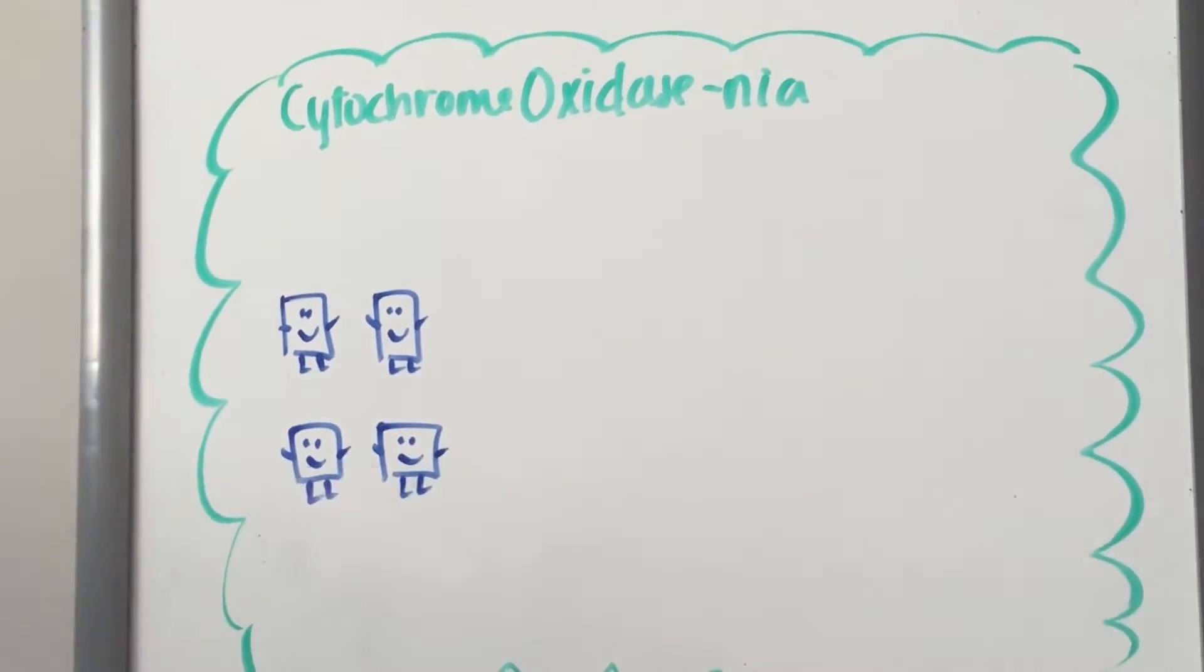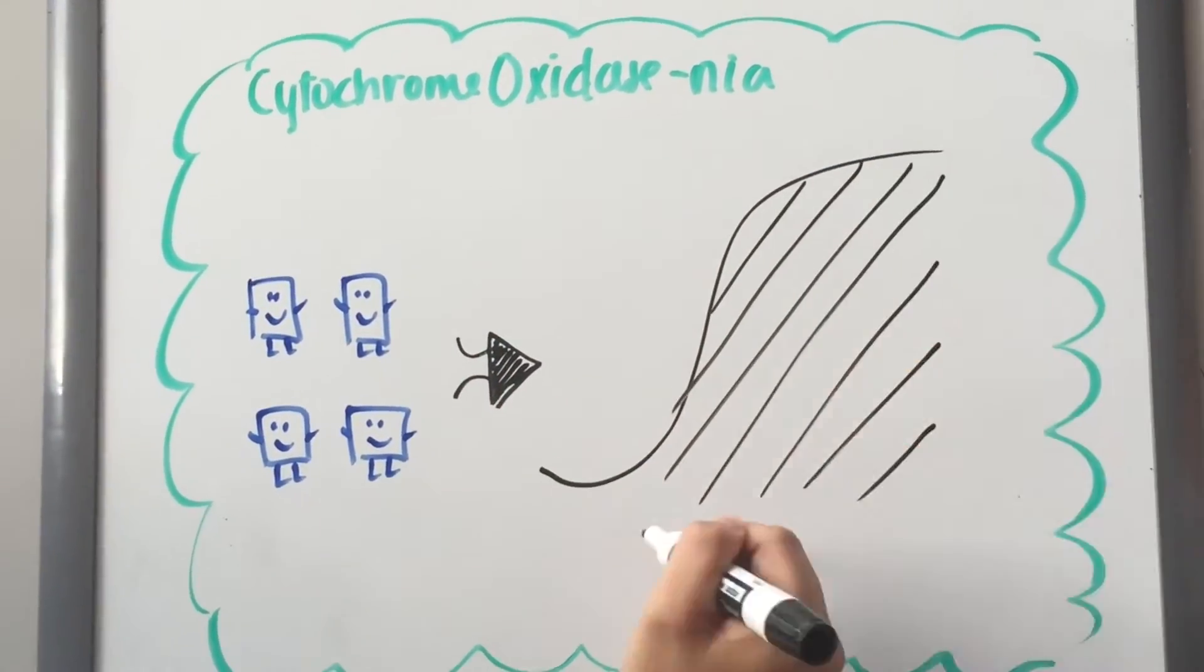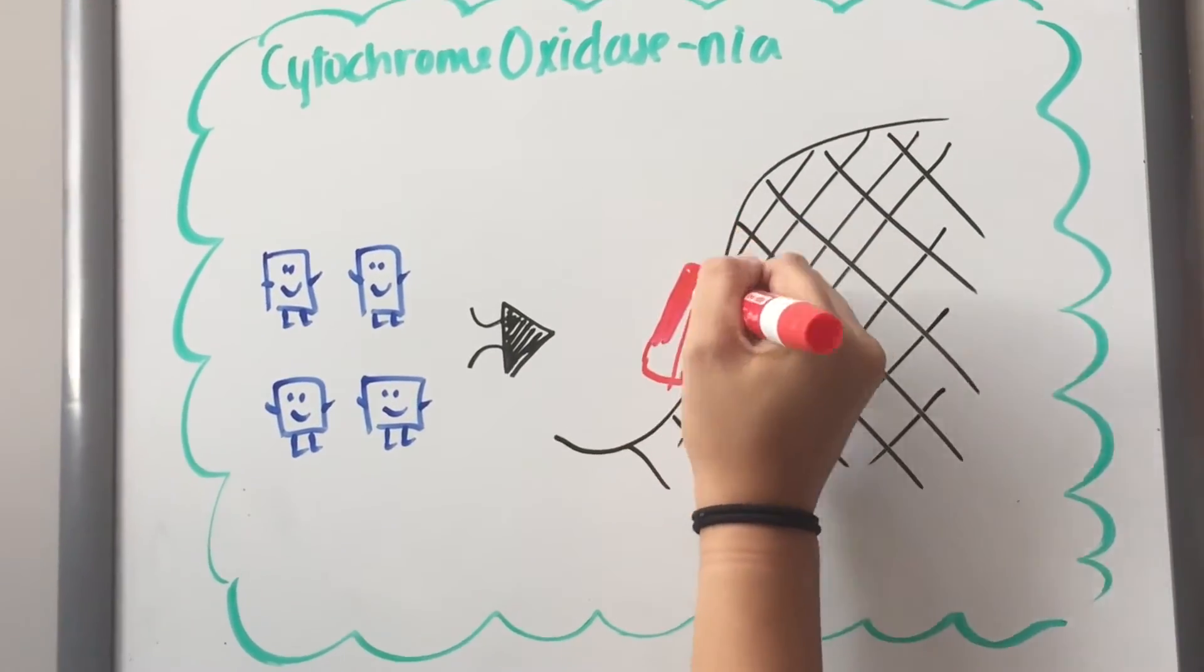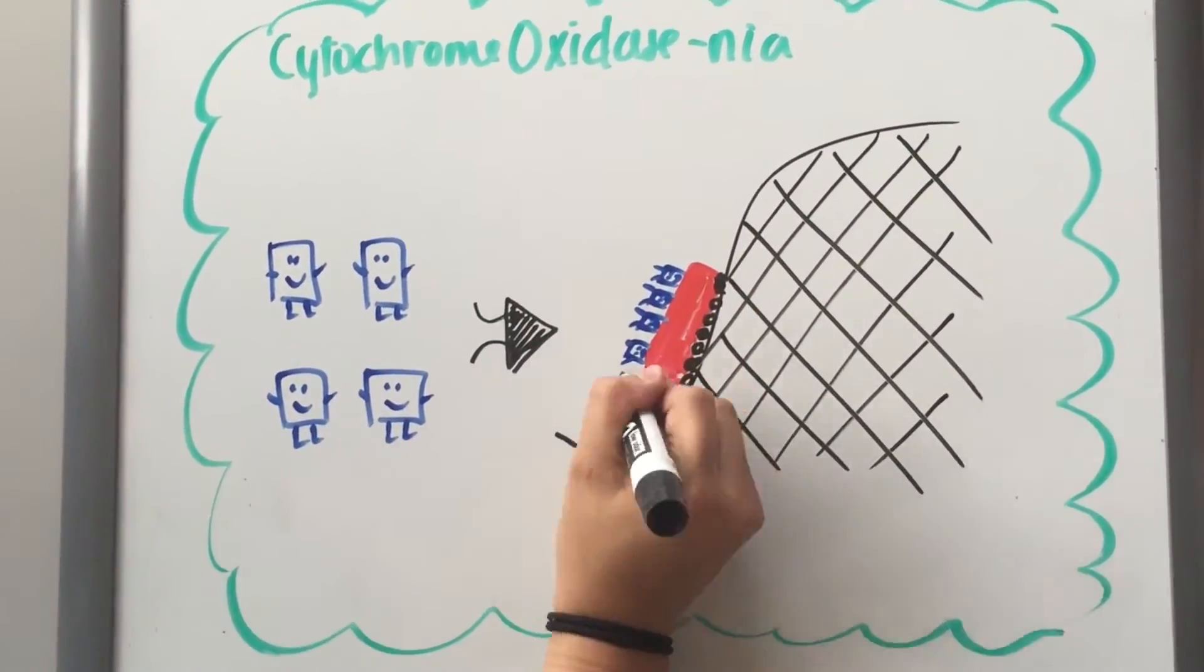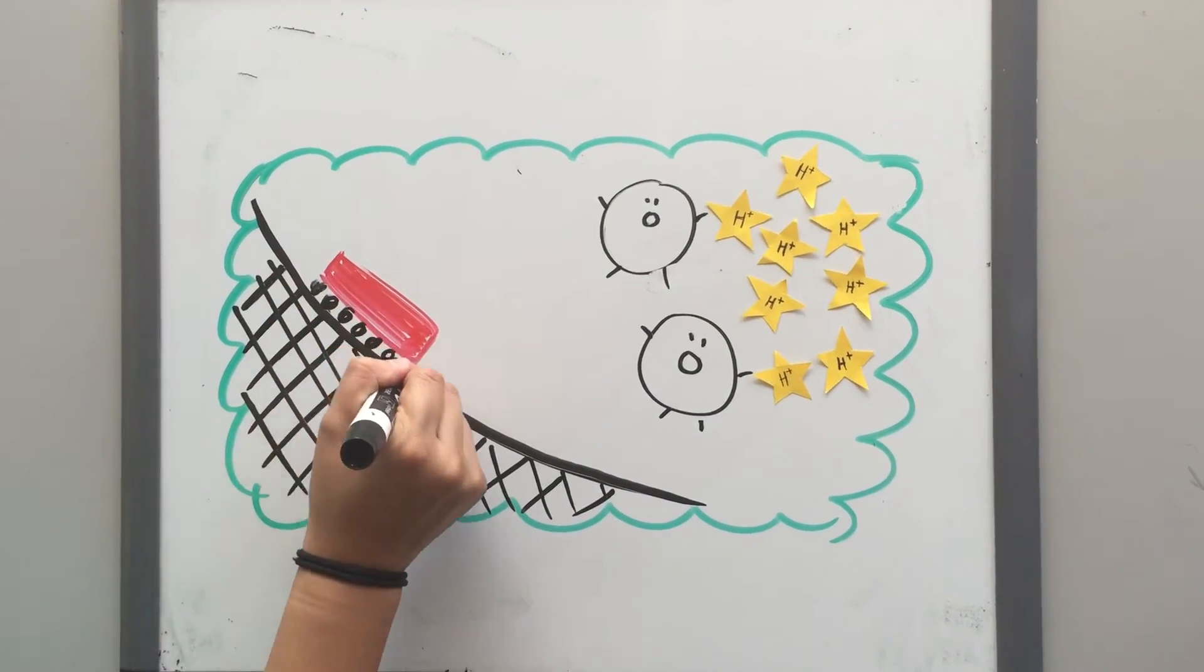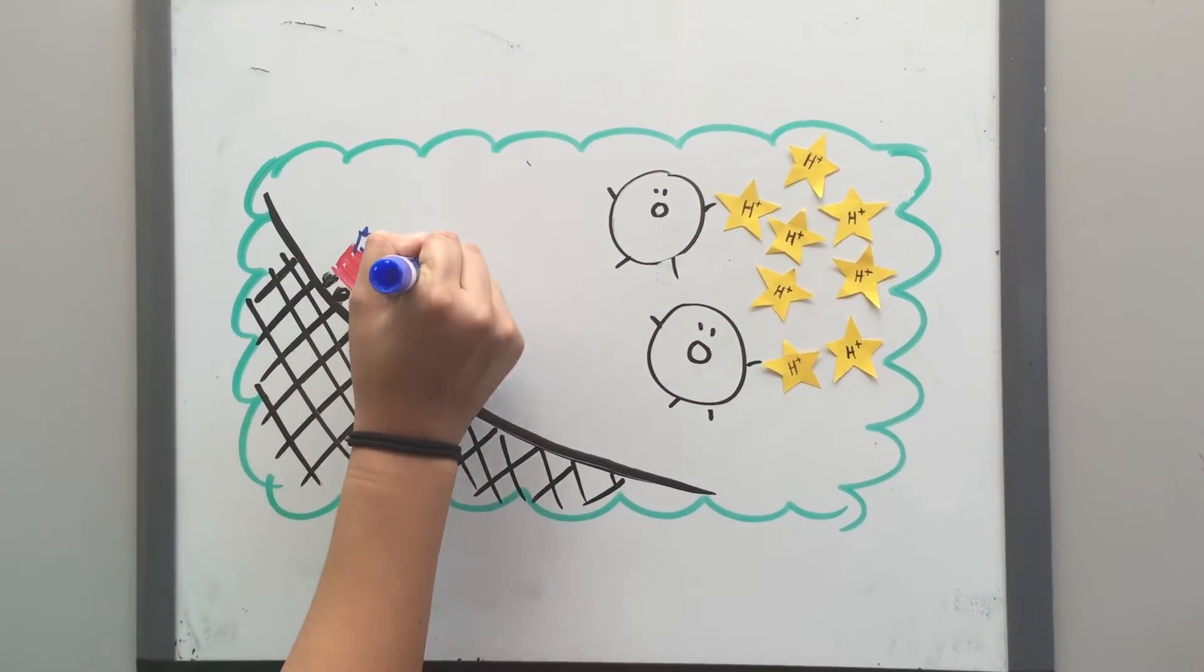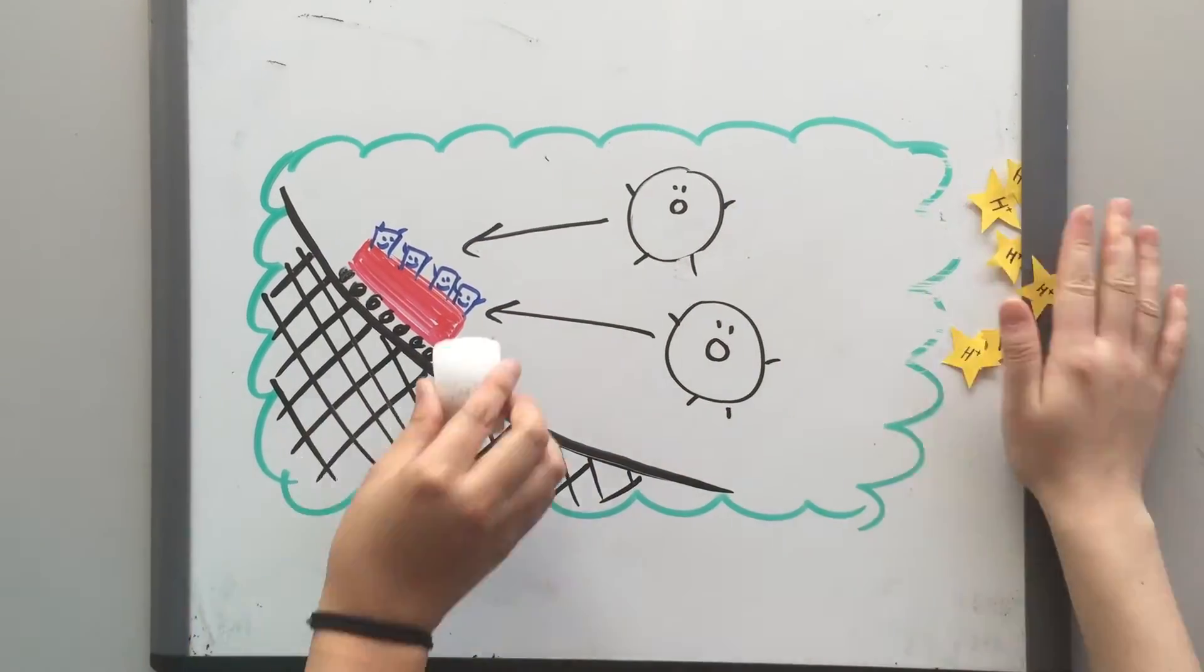Finally, they arrived at cytochrome oxidase-nea. They have to wait for two more electron buddies to arrive before taking the Great Rollercoaster because it only has cars of four passengers. The Great Rollercoaster takes the four electrons back to land. The four electrons interact with molecular oxygen and eight stars.